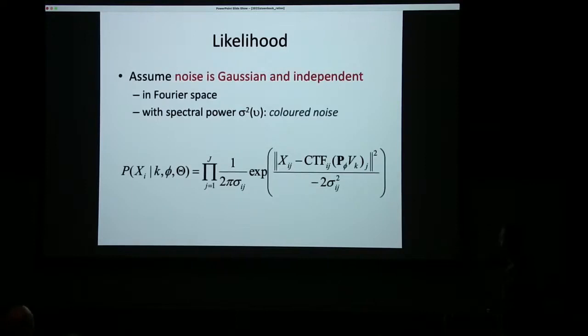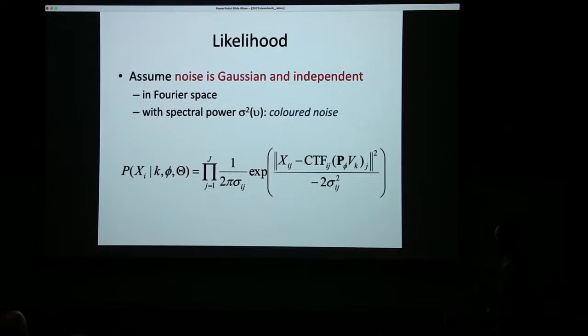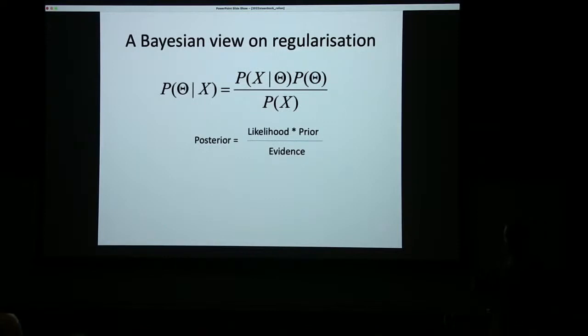Based on these assumptions, for each pixel j in Fourier space you make a Gaussian where this is the value of the Fourier pixel in the experimental image. The CTF has to do with this point spread function, which I'll ignore for now. This term here is the projection of the three-dimensional volume in Fourier space — just taking a two-dimensional slice out of that three-dimensional Fourier transform. The Gaussian is as wide as the estimated noise power at that spatial frequency.